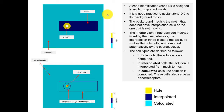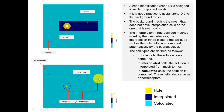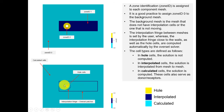It's good practice to assign zone ID zero to the background mesh — the one that is not moving or does not have any overset patches. After assigning zones using setFields, there is an additional step where you need to create interpolation fringe cells. These are the patches where we interpolate the solution between meshes. The overset patches are defined by the user; interpolated cells and hole cells are created automatically by the solver.